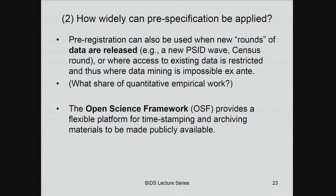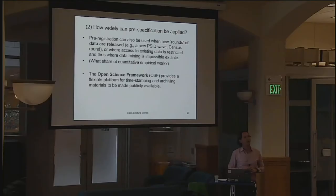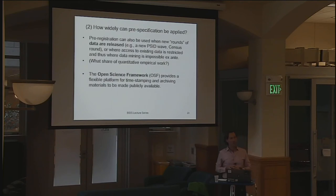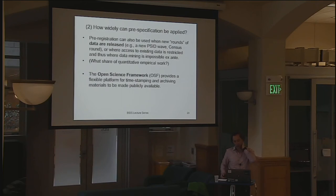The current AEA registry is meant to be for RCTs, but there are other platforms one could use to register a pre-analysis plan, such as the Open Science Framework, put together by the Center for Open Science in Virginia. They have a very flexible system — you can basically register and make public whatever you want, create a permanent URL, and they're also trying to increase interoperability with the AEA registry. My own view is the AEA registry should be open to more than RCTs — it should be open to any prospective study where it's credible that you could register and timestamp your hypotheses.